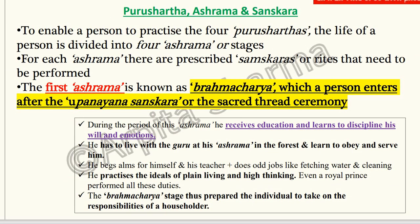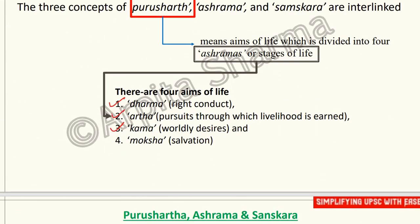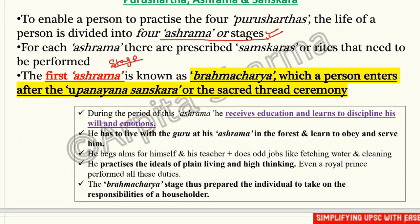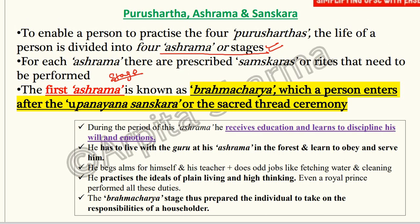To enable a person to practice the four Purusharthas, the life of a person is divided into four Ashramas. The first Ashrama is Brahmacharya, which a person enters after the Upanayana Sanskar or sacred thread ceremony. During this stage, the person receives education and learns to discipline his will, emotions, and reactions. He lives with the guru at his ashram in the forest, learning to obey and serve.